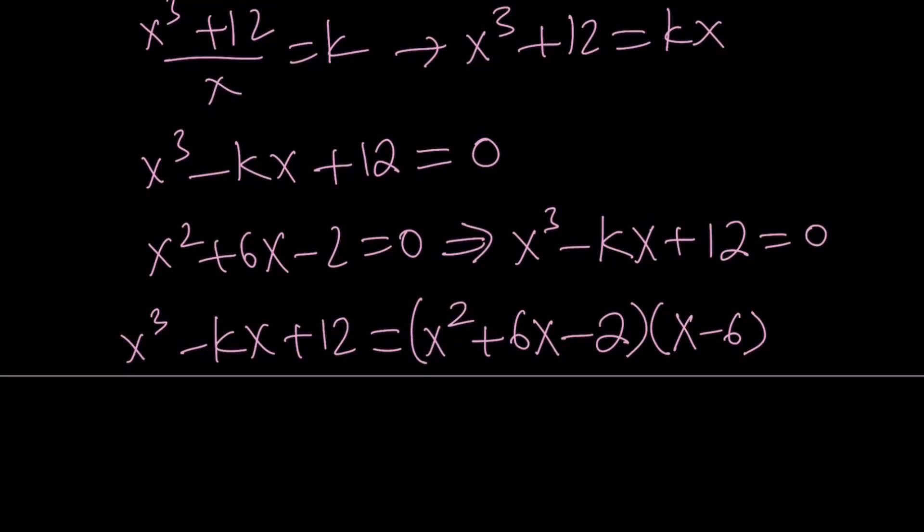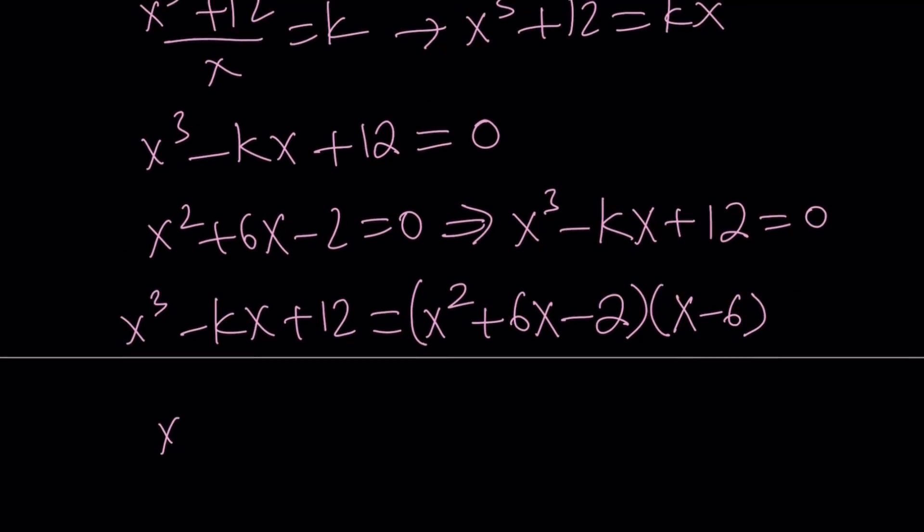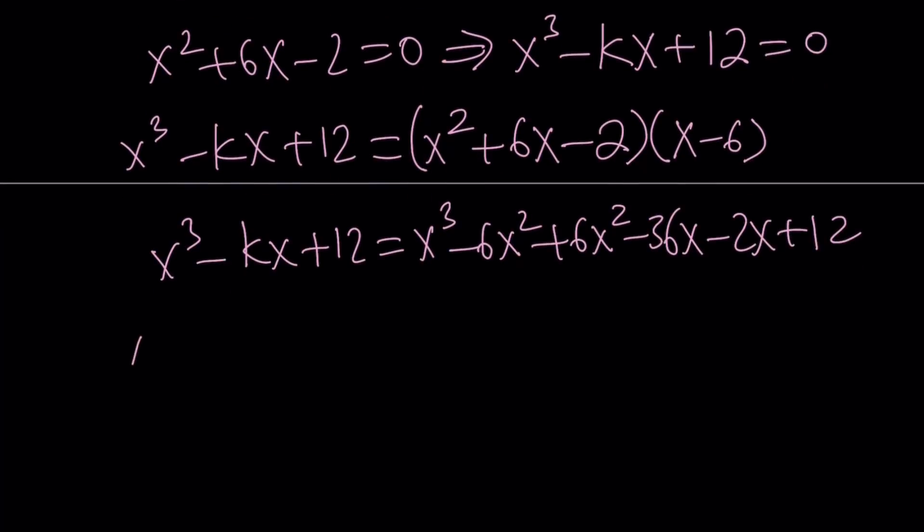Now let's distribute what's on the right hand side and set it equal to the left hand side. I would like to simplify this on the right hand side. So let's distribute x cubed minus 6x squared plus 6x squared minus 36x minus 2x plus 12. Now let's simplify that by adding like terms. We have x cubed. By the way, x squared cancels out nicely. Notice that there's no x squared on the left hand side. So that makes sense. We have negative 36x minus 2x. That is minus 38x plus 12.